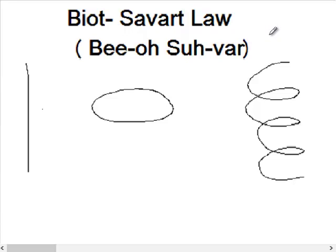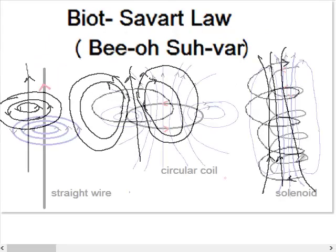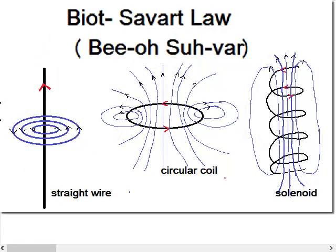Now we are going to find the Biot-Savart law to find the magnetic field due to a conductor of any shape. For each of these cases, whether it is a straight wire, a circular coil, or a coil with more turns which is a solenoid, if you want to find the magnetic field for them, then we can use the Biot-Savart law.